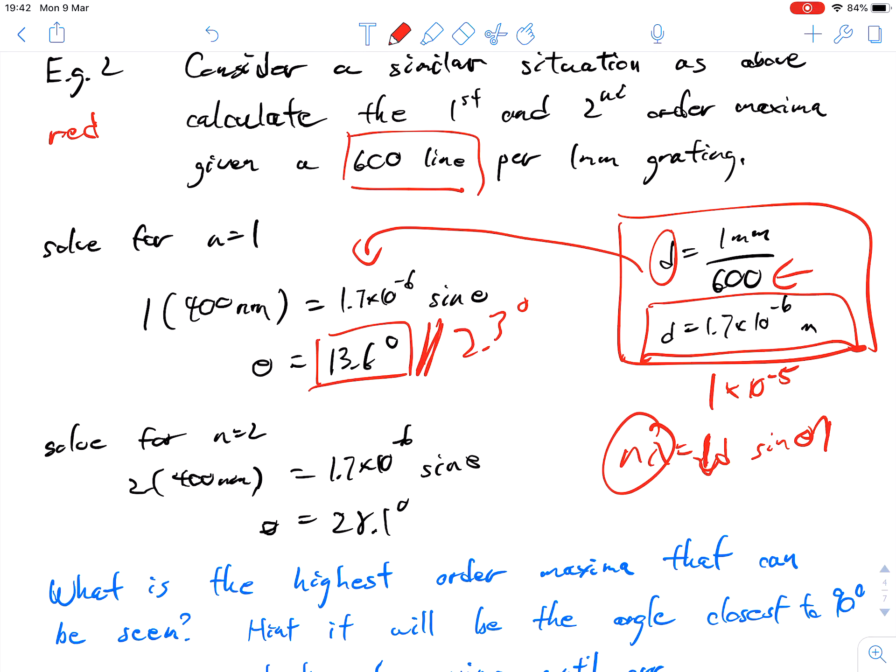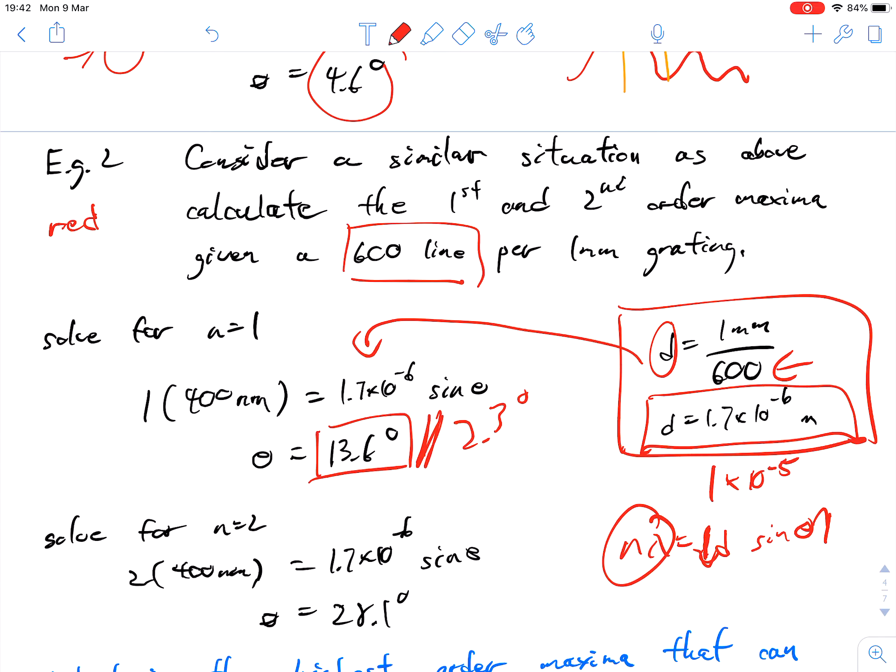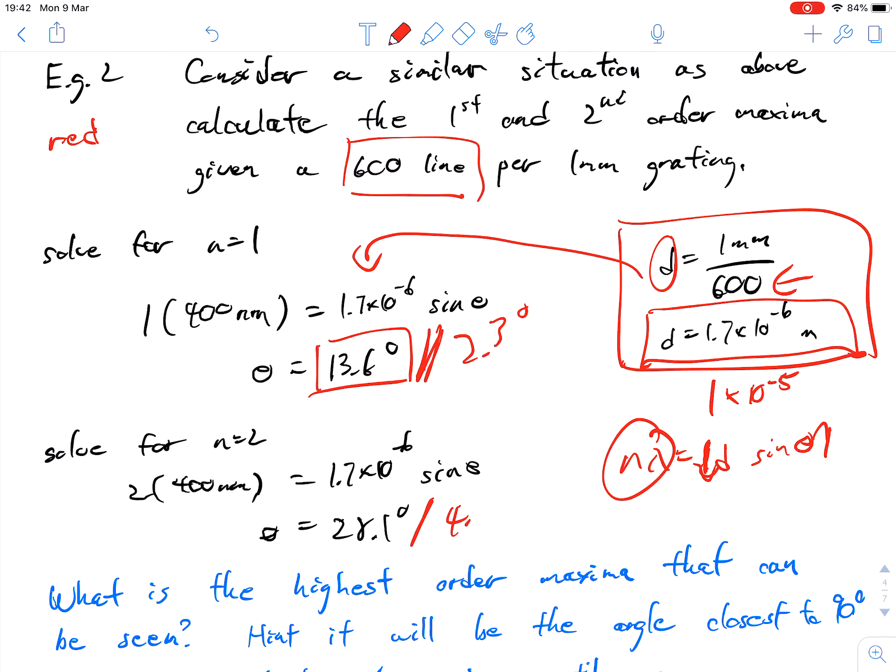Next one, we're at n equals 2. Same thing with the slit separation, 1.7 times 10 to the power of negative 6. And then we're getting 28.1 degrees. Before, the angle was 4.6 degrees. So that's the comparison: 4.6 degrees with 100 lines, 28.1 degrees with 600 lines. And for the first order: 600 lines, 13.6 degrees; 100 lines, 2.3 degrees.